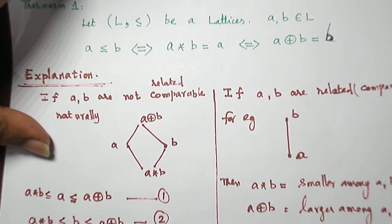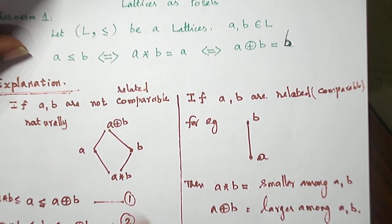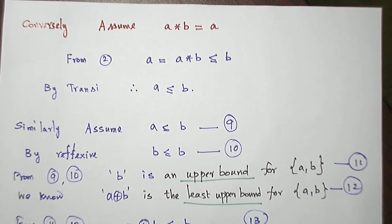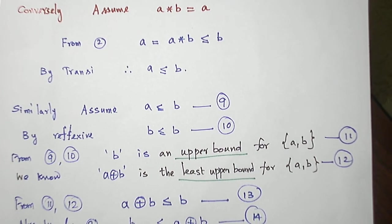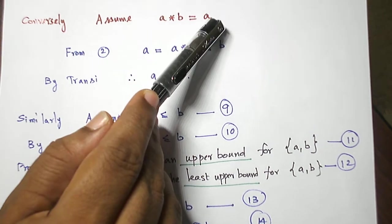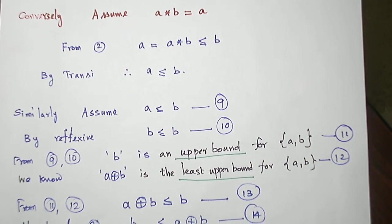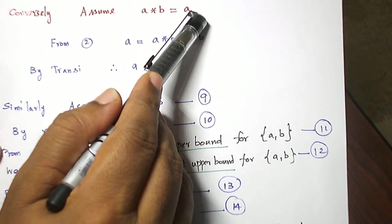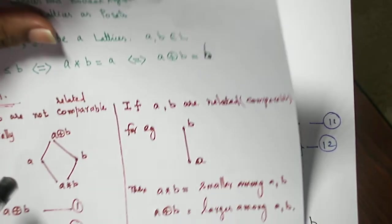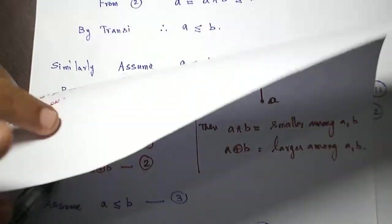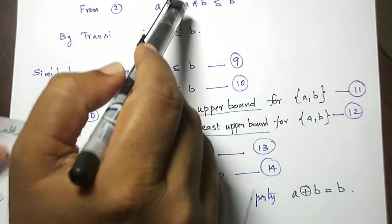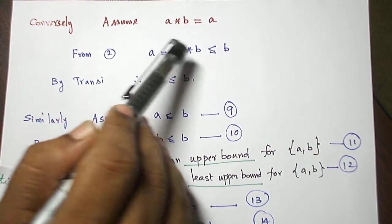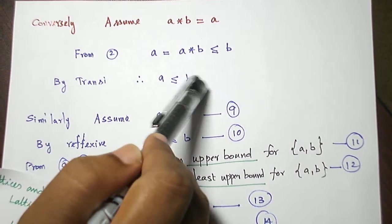Now let us prove the other direction. Conversely, assume A∧B = A, and let us prove A ≤ B. From inequality 2 we have A∧B ≤ B. Since we assumed A∧B = A, naturally A ≤ B follows directly.